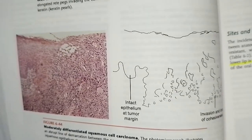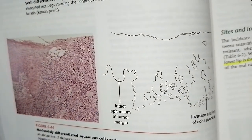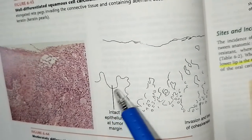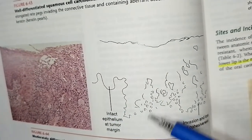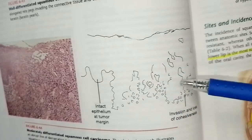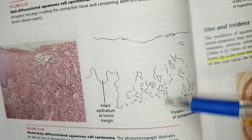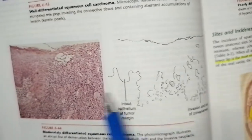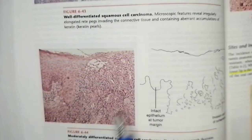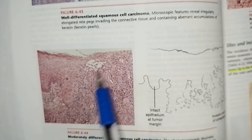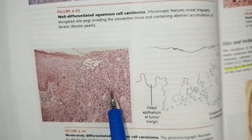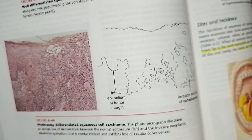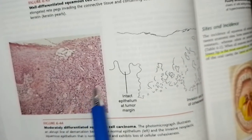In moderately differentiated squamous cell carcinoma histopathology, there is an abrupt line of demarcation between the normal epithelium and the invasive neoplastic squamous epithelium, with loss of cohesiveness between cells and non-keratinized squamous epithelium.